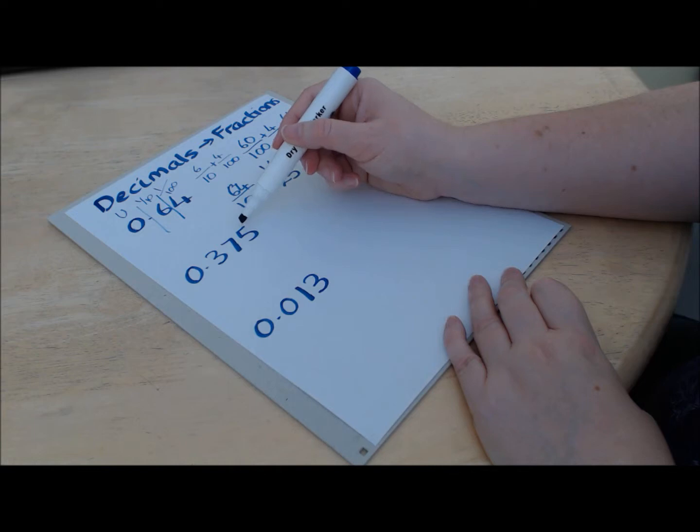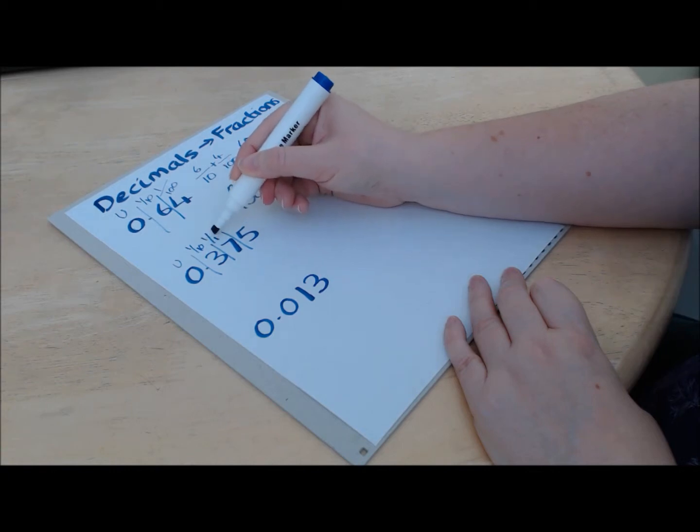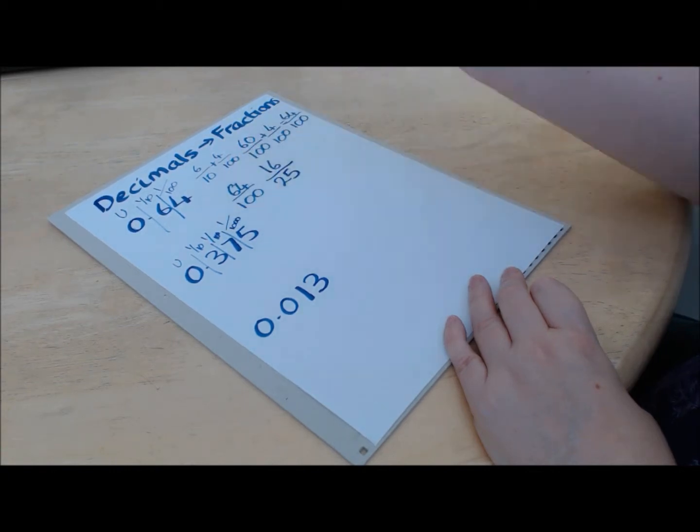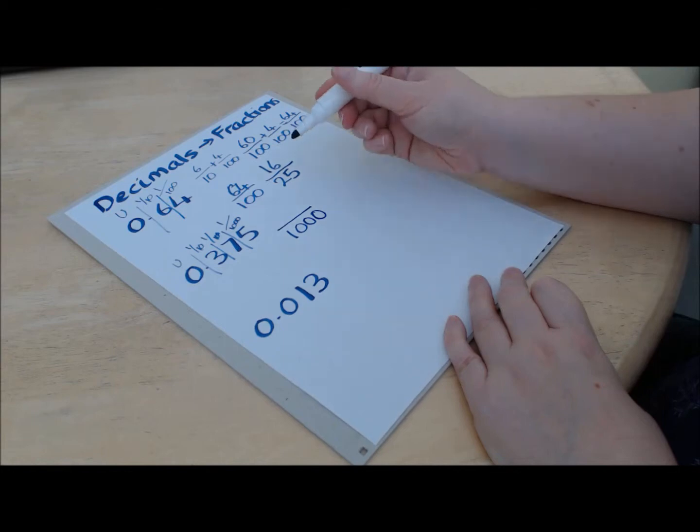So the smallest part of this one, we've got units, tenths, hundredths, and this bit here is thousandths.